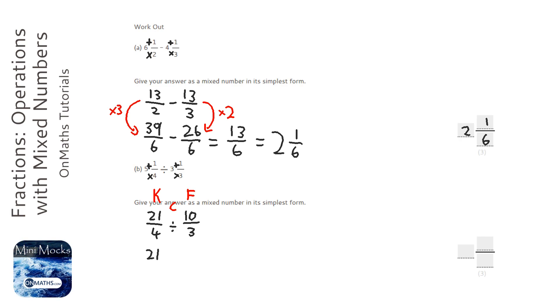So we've got twenty-one over four. Keep that the same. Change the divide sign to a times, because you can't really divide with fractions, so we change it to a times. But to do that, we need to flip the second one. So it becomes three over ten.